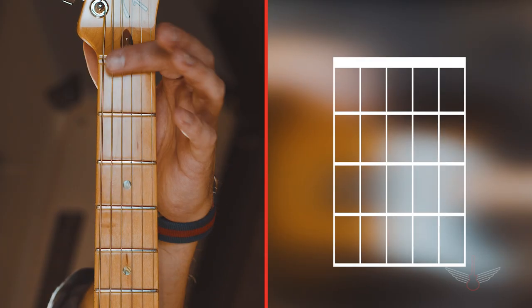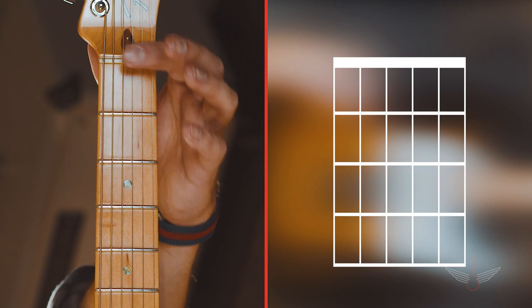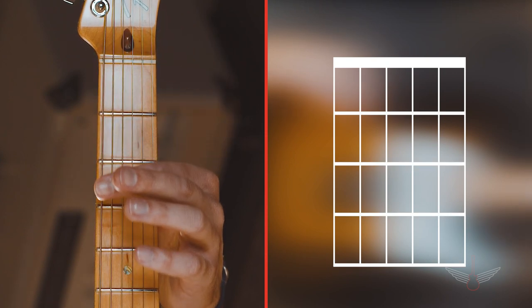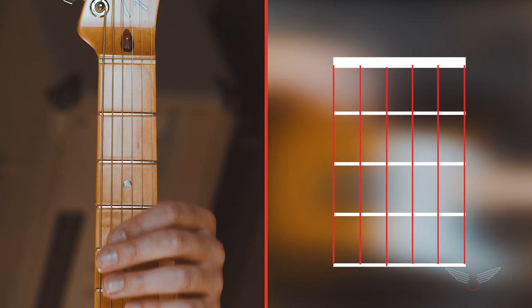This dark line represents your nut. These horizontal lines here are your frets, and these vertical lines here are your strings.